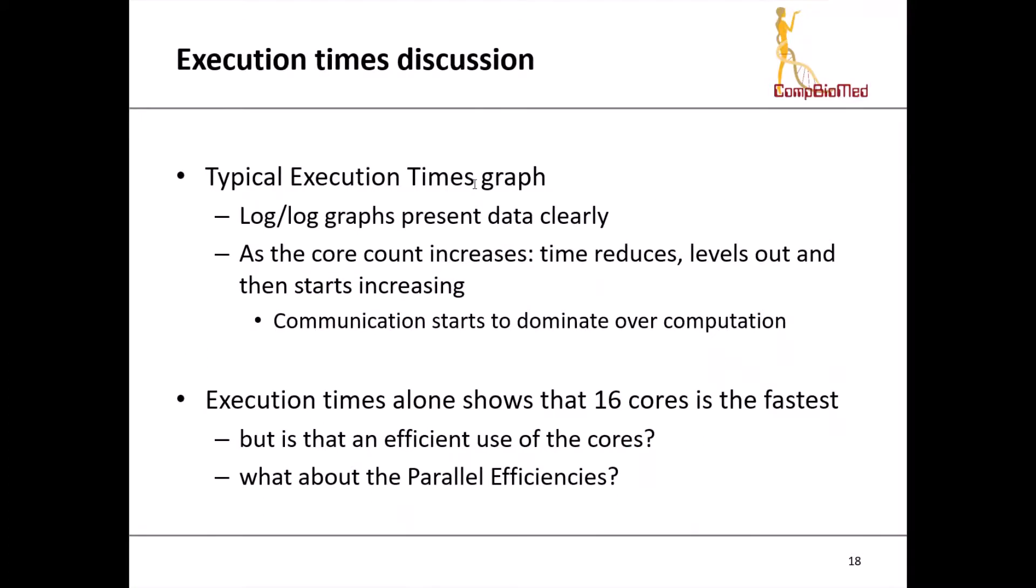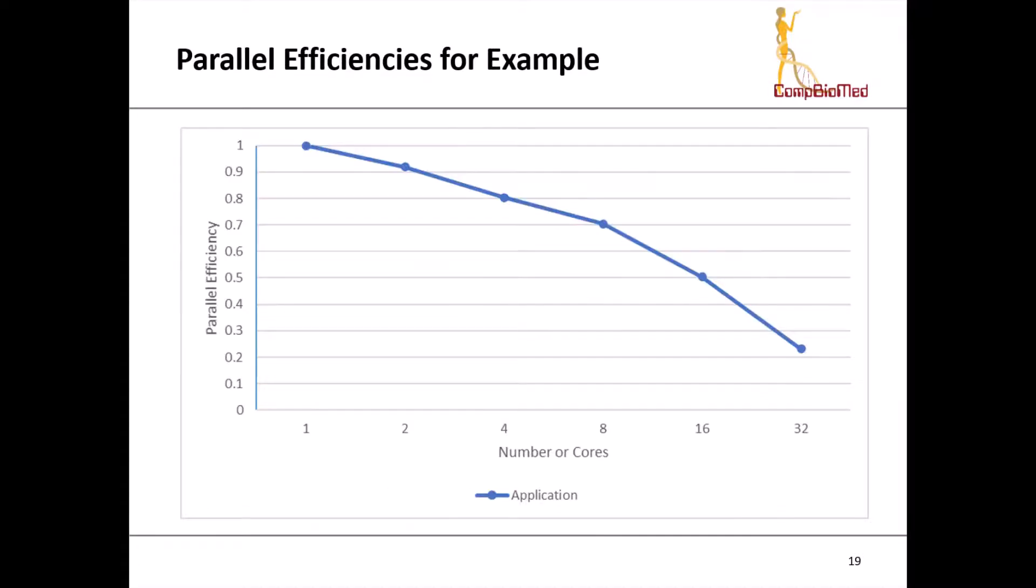The execution time shows that 16 cores is the fastest, but is that really an efficient use of the cores? So we look at the parallel efficiencies. Here they are for this particular example. Again, we have the number of cores along the bottom, but this time we have parallel efficiency on the vertical axis, and it's no longer logarithmic, just linear now. We start with 100% on one core and then this reduces down as the number of cores increases. Typically what we use is a parallel efficiency of 70%, which would be eight cores. If you remember, 16 cores was the fastest, but you can see that that efficiency was actually 50%, which is quite poor really.